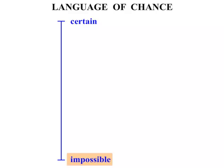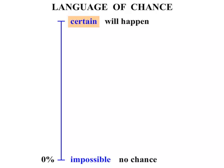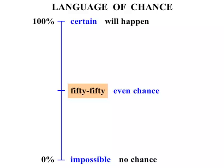If something is impossible we might say it has no chance, or zero percentage. If something is certain, well then definitely it will happen — it's got a 100% chance. Right in the middle of something being impossible or certain, we say it's 50-50. We might even say 50-50 is an even chance, or one chance in two. As a percentage it's 50%.